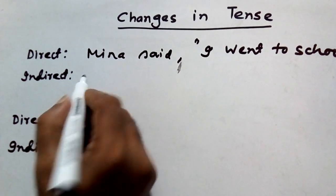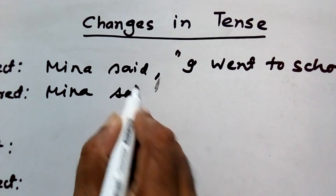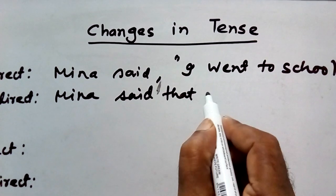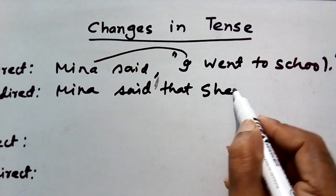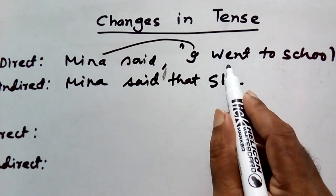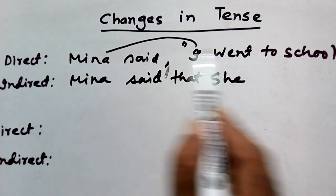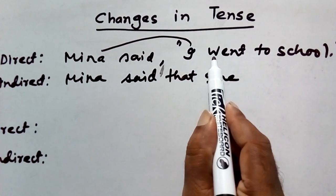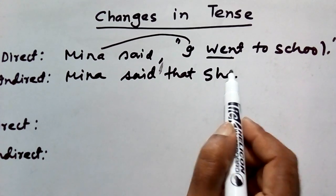If we change this sentence to indirect speech, we can write: Mina said that she — because 'I' denotes Mina here, so she — and it is past simple tense. In our previous class we discussed that if the reporting verb is in past tense, the tense will change into the corresponding past tense. It is past simple, so it will change into past perfect.